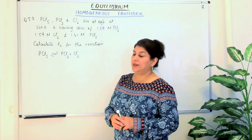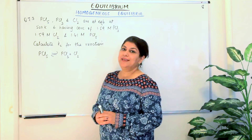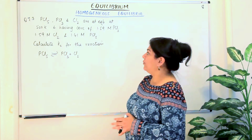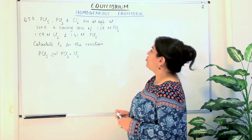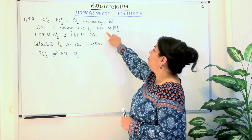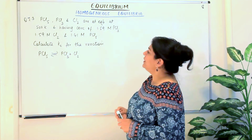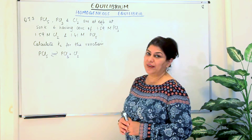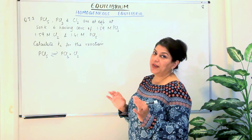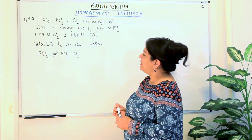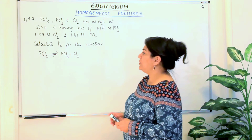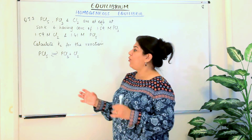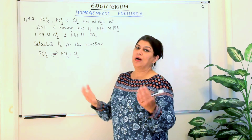This is question 7.3. The question says that PCl5, PCl3, and Cl2 are at equilibrium at 500 Kelvin and have concentrations of 1.59 molar PCl3, 1.59 molar Cl2, and 1.41 molar PCl5. So the concentrations of all the reactants and products are given to us. You have to calculate Kc for the reaction: PCl5 is in equilibrium with PCl3 and Cl2. It's a very simple question — all values are given, you only have to plug in the values and know how to calculate Kc.